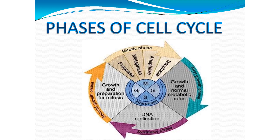Phases of the cell cycle. Between two consecutive mitotic stages, the cell remains in the interphase stage. Some call it the resting stage of the cell, but actually it is not the resting stage. During interphase, the cell does everything except cell division, but the nucleus and the cytoplasm remain metabolically active. The interphase stage is divided into three phases.